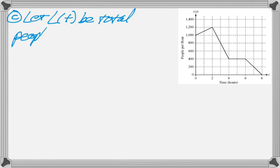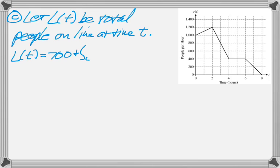All right, so in this next problem, I need to find when the line is the longest. I'm going to define a new function that tells me how many people are in line, so that's L of T. So L of T is going to be 700, the number you start with, plus the integral from 0 to T of the rate, the total rate. And I'm using a dummy variable, x, there.